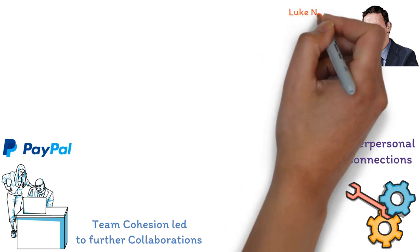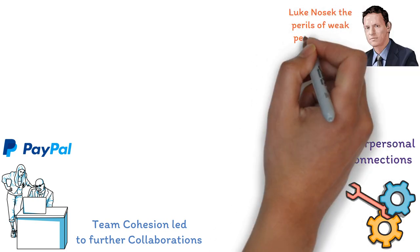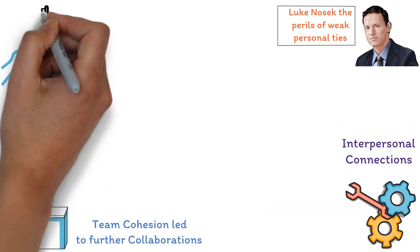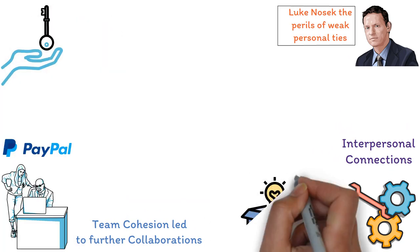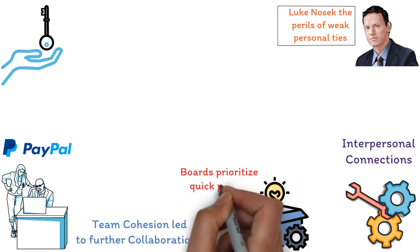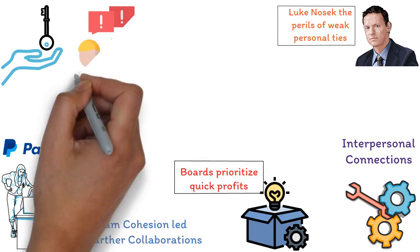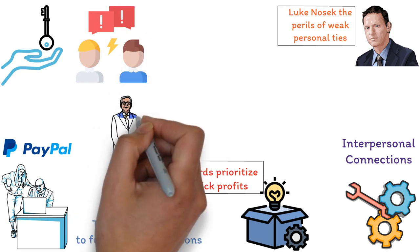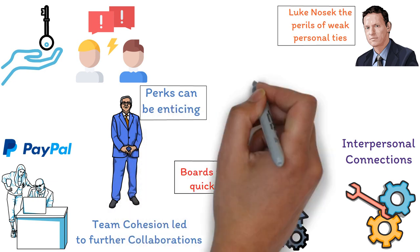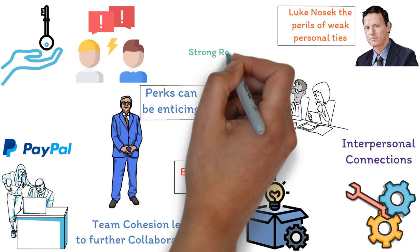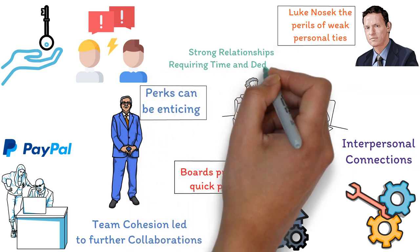Peter Thiel learned from an earlier investment with Luke Nasek the perils of weak personal ties. Ensuring alignment among stakeholders is key, especially as founders often focus on product development, while boards prioritize quick profits. Potential conflicts should be addressed early. But fostering a robust culture extends beyond top leadership. While perks can be enticing, true company culture revolves around building and maintaining strong relationships, requiring time and dedication.